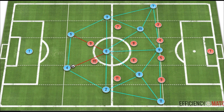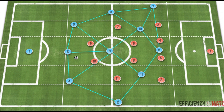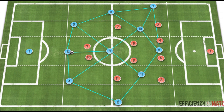We change the structure by dropping the six between each of the central defenders, creating a back three, which now creates strong passing connections into our new holding midfielder, the number eight. We have a vertical pass into the holding midfielder, diagonal passes from our wide central defenders, and if players press a little higher or become more narrow, some of these passing lanes would be even more emphasized and open.